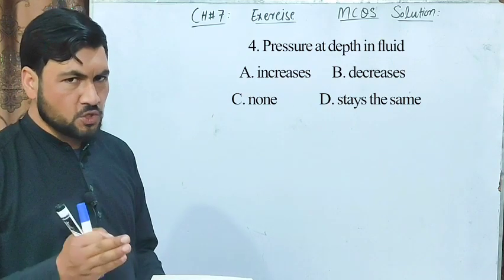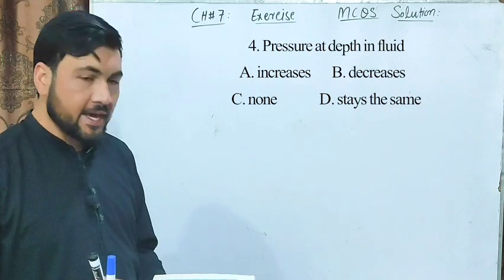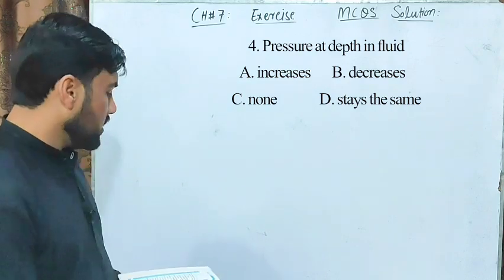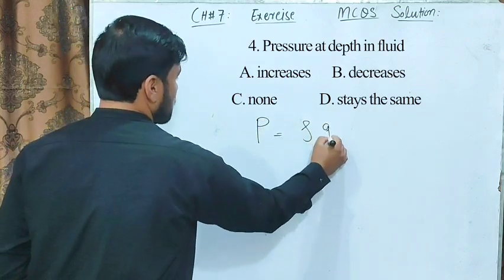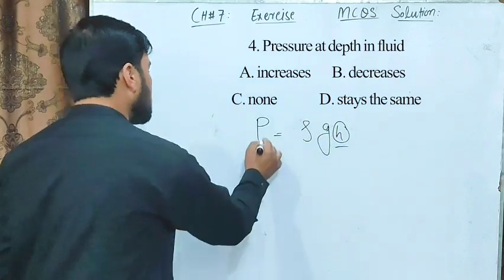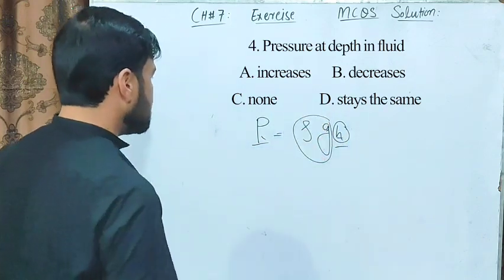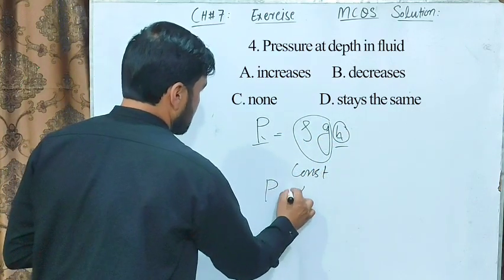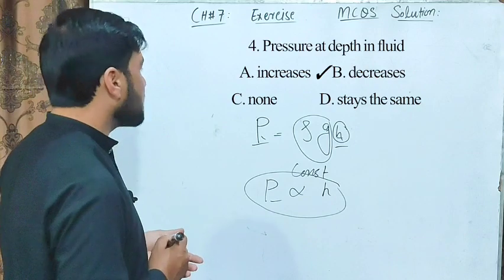MCQ number 4 statement: pressure at depth in a fluid — as you go deeper in a fluid, what happens to pressure? Option A: increases. Option B: decreases. Option C: stays the same. The formula is P equals rho times g times h. Rho is density and g is gravitational acceleration — both constants. So pressure is directly related to h (depth); as h increases, pressure increases. Correct option is A.